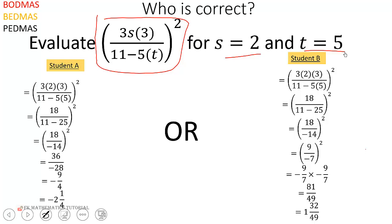So they have to do substitution for s equals 2. We did that. Then for t equals 5, we did that. That's correct.